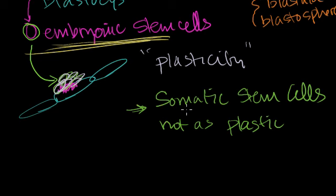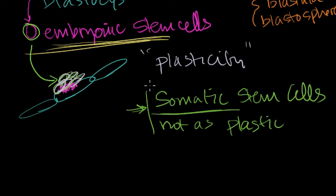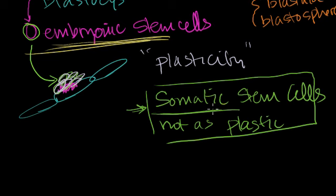There's an area of research where people are trying to make somatic stem cells more plastic. If they are able to take these somatic stem cells and make them more plastic, it might kill the need for embryonic stem cells — although if they do this too well, maybe these will also have the potential to turn into human beings. But right now this isn't an area of debate, because left to their own devices, a somatic or adult stem cell won't turn into a human being.